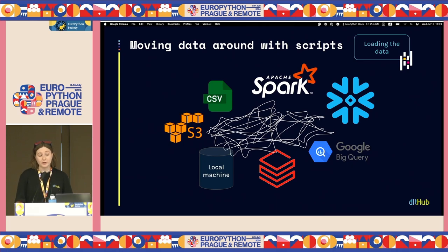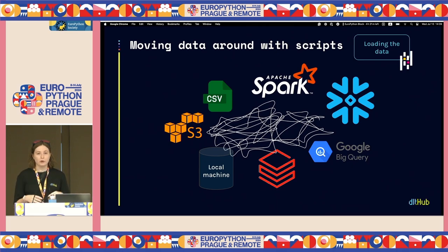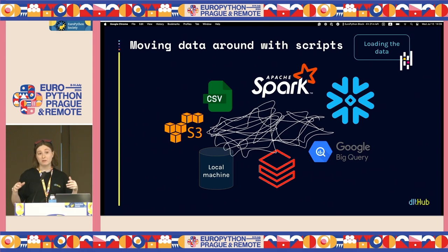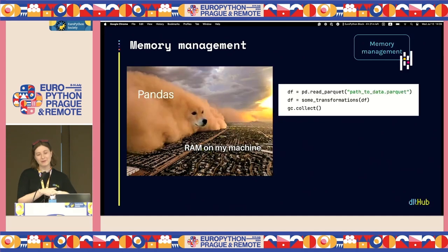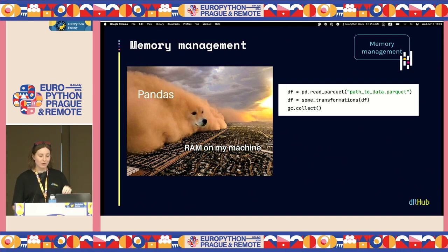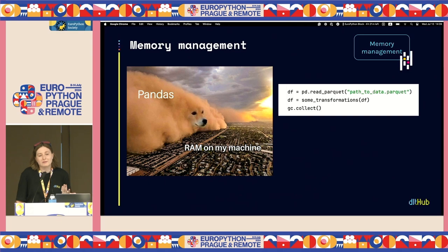Another thing when you're moving to production: you usually move data around a lot — for your CI scripts, for model training, for model testing — and you usually use Python scripts. You need to connect to all these entities and it can become quite messy. Memory management — my favorite — probably at some point all of you had to explicitly call the garbage collector. Pandas uses a lot of RAM and sometimes it's not enough to load data chunk by chunk. You need more control over memory.